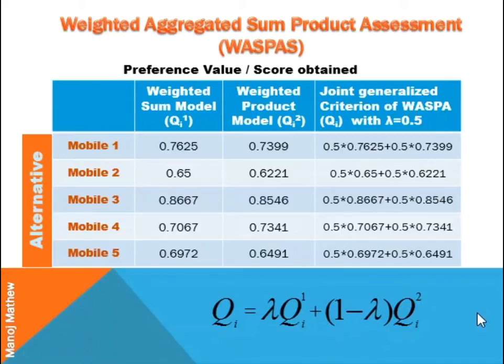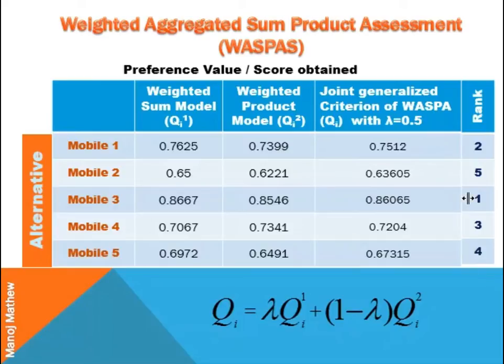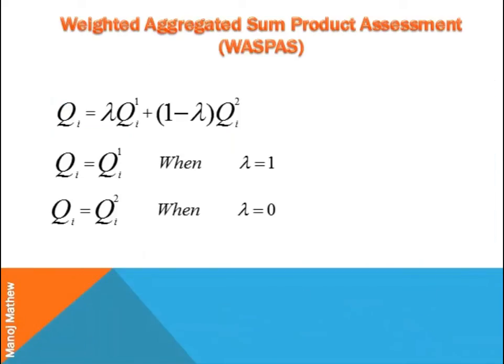On further calculation we get the value for the joint generalized criterion, and the corresponding ranks are given here. The value of lambda lies between 0 and 1.